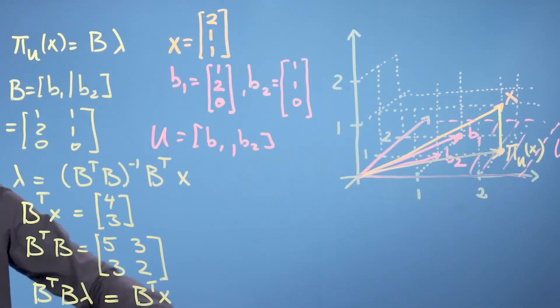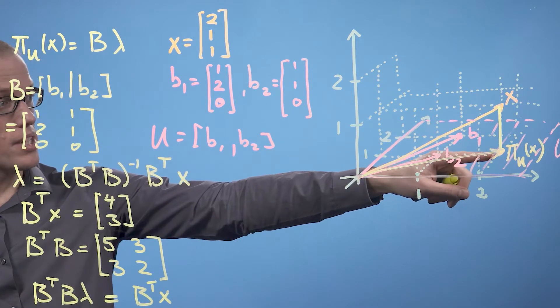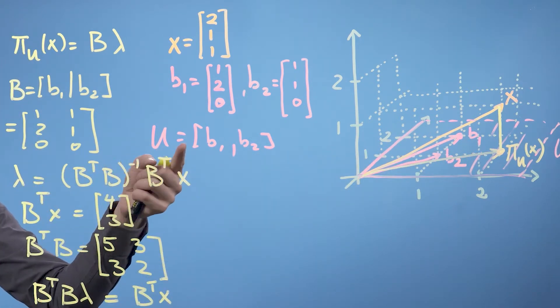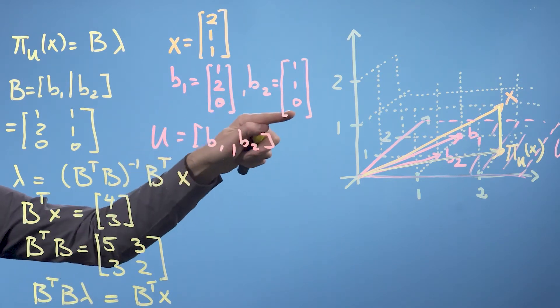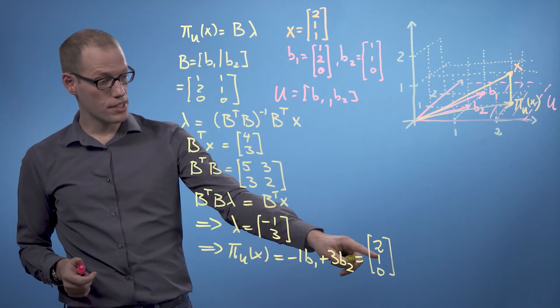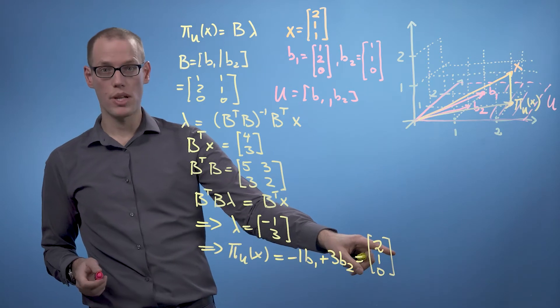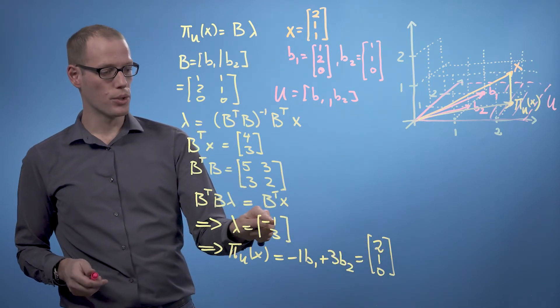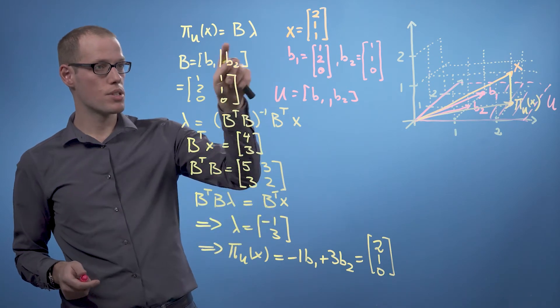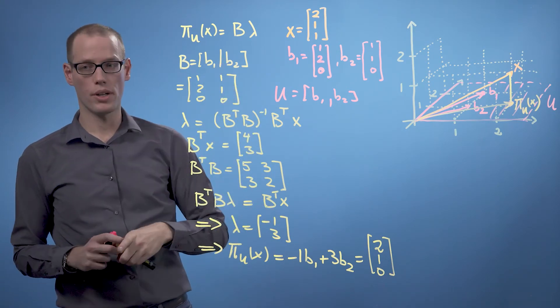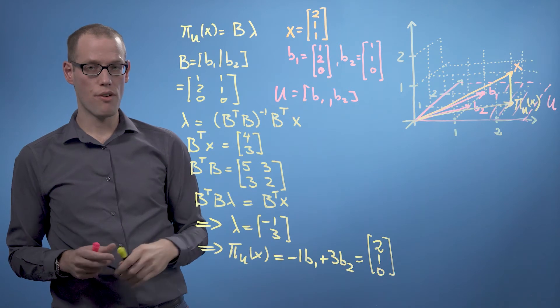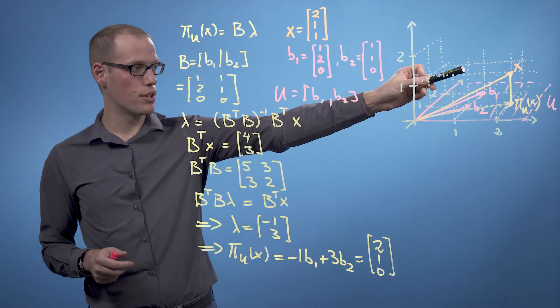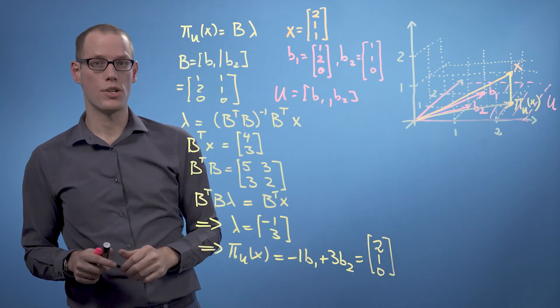This result makes sense because our projected point has as a third component the 0 and our subspace requires that a third component is always 0. Our projected vector is still a three-dimensional vector, but we can represent it using two coordinates if we use the basis defined by b1 and b2.